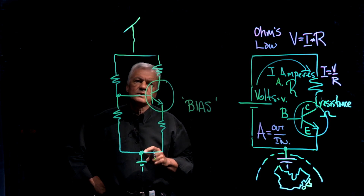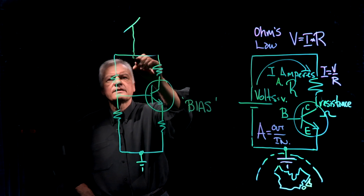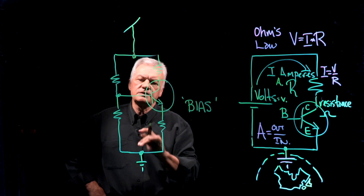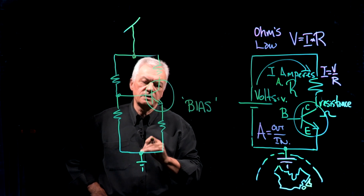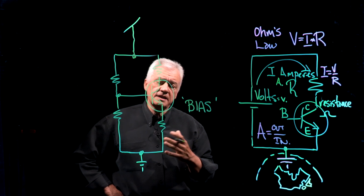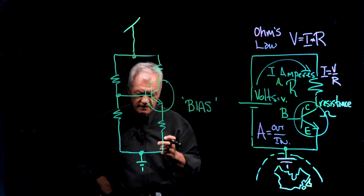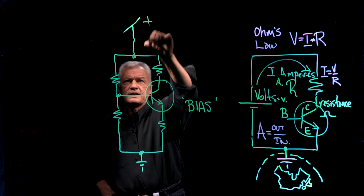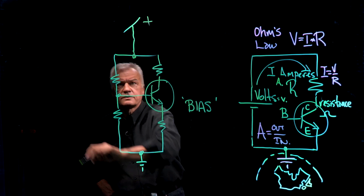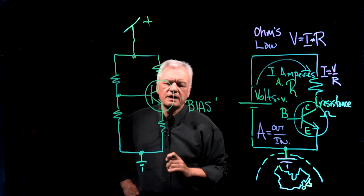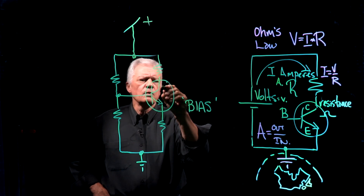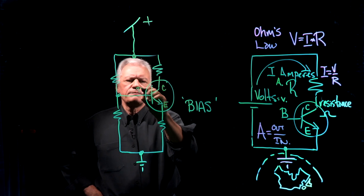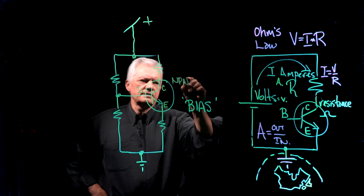As you know with electronics, the current flows in one direction. These devices normally only handle current flow in one direction, and that's how we design and optimize them. This is our source — we'll make this one plus, this is our ground, this is our return, and these two come back together just like we have in the battery. This is our collector, this is our emitter, and this is our base for this particular NPN transistor.